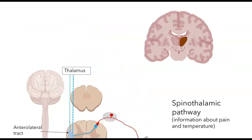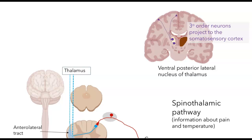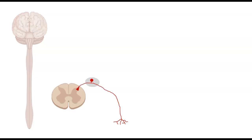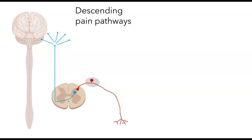After information reaches the thalamus via the spinothalamic pathway, the processing is essentially the same as for touch — somatotopic organization is preserved in both the thalamus and the somatosensory cortex. The two pathways described so far are both ascending pathways. However, there are also many descending pathways, and one important example modulates pain information. Widespread projections to brain stem regions can activate feedback loops that either lessen or enhance the propagation of painful information through descending pain pathways.